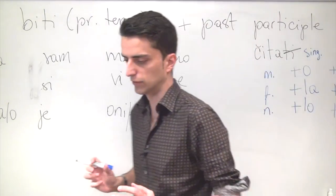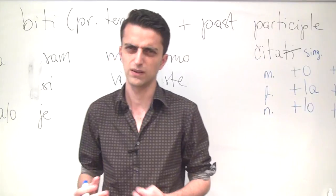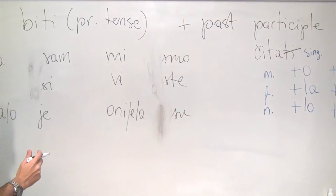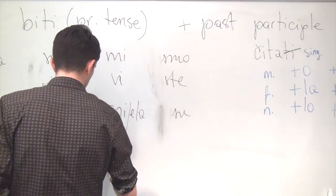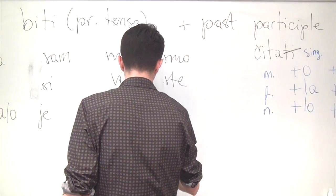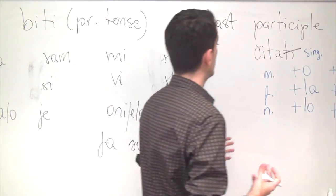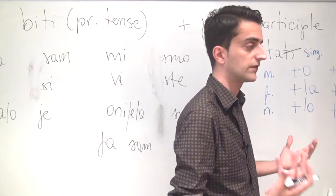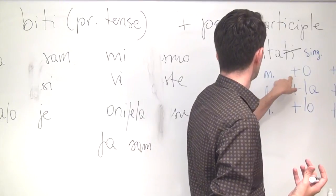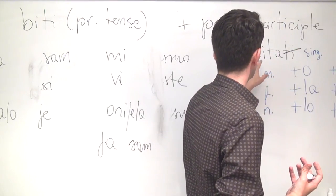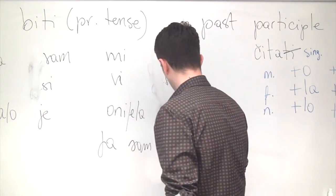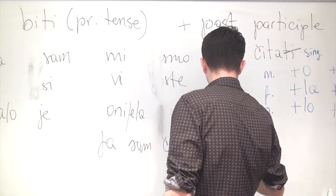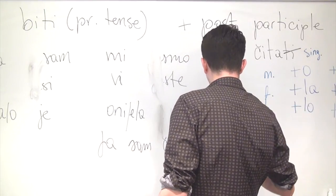And then you just simply combine the two. So, let's use it in a sentence so that I can show you how it works in practice. Let's say, ja sam, and since I'm male, I will use singular, of course, because ja is first person singular. Masculine past participle of the main verb, čitao knjigu. I was reading a book.